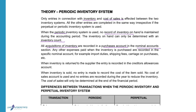Any other expenses when inventory is purchased are recorded in a nominal account. For example, you will open an account for import duties, shipping fees, carriage on purchases, etc. All these expenses will be recorded in the inventory account when you use the perpetual inventory system.